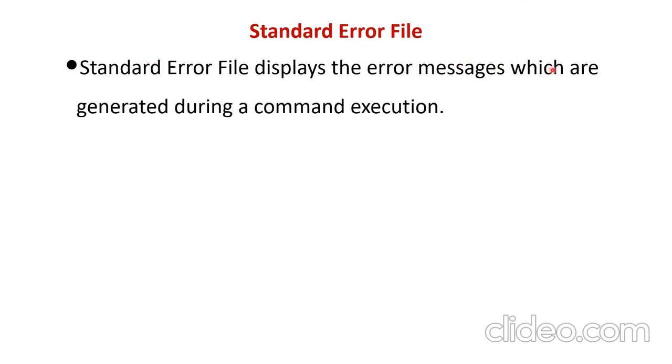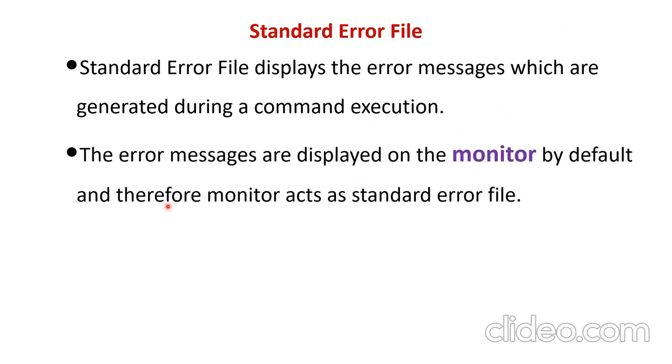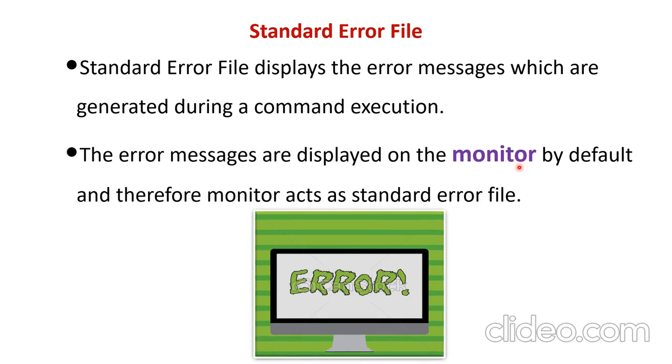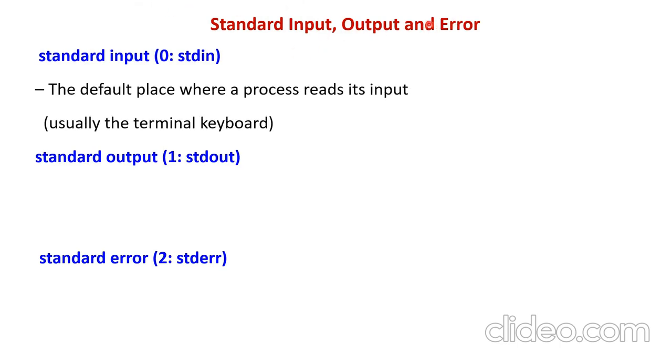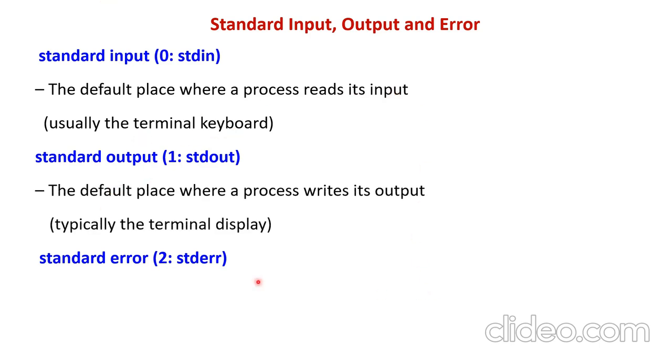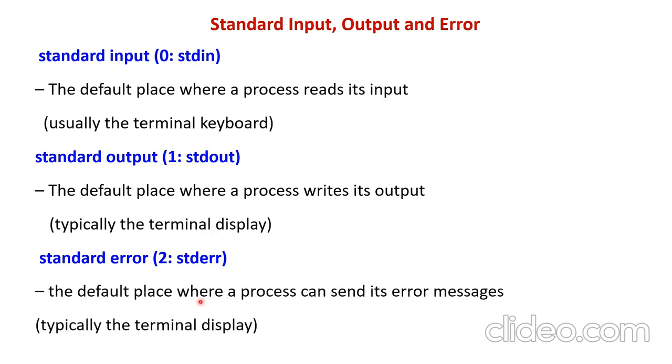It displays the error message which is generated during a command execution. That command execution error message is also displayed on the monitor. If you got any error in your compilation, that is also displayed in the monitor. Standard input, output and error have the file descriptors 0, 1 and 2 respectively. Standard input is the default place where process reads input. And standard output is where a process writes output, usually terminal that is a monitor. And standard error is where a process can send its error message, it is also made in the terminal.